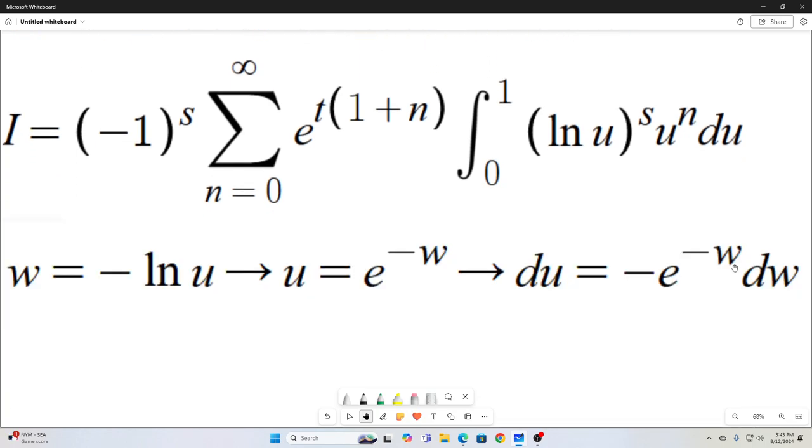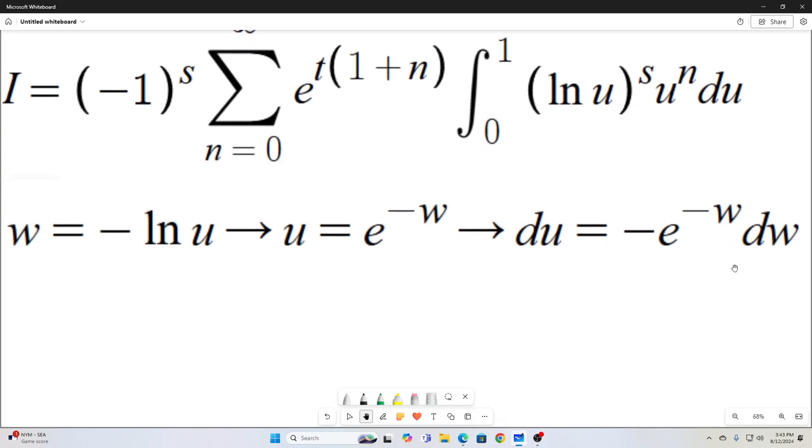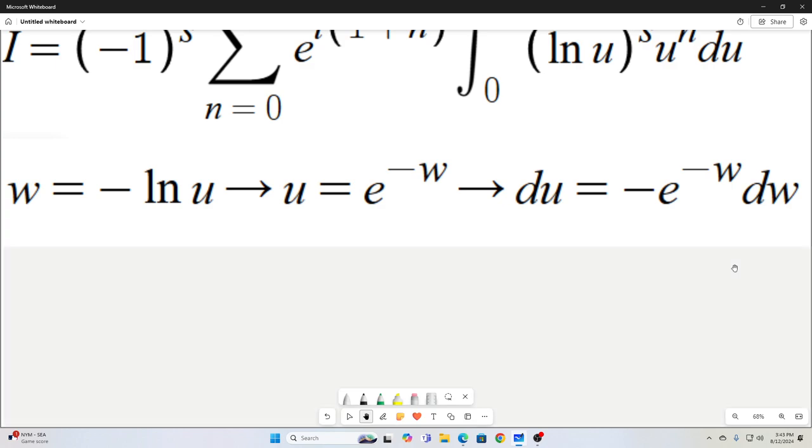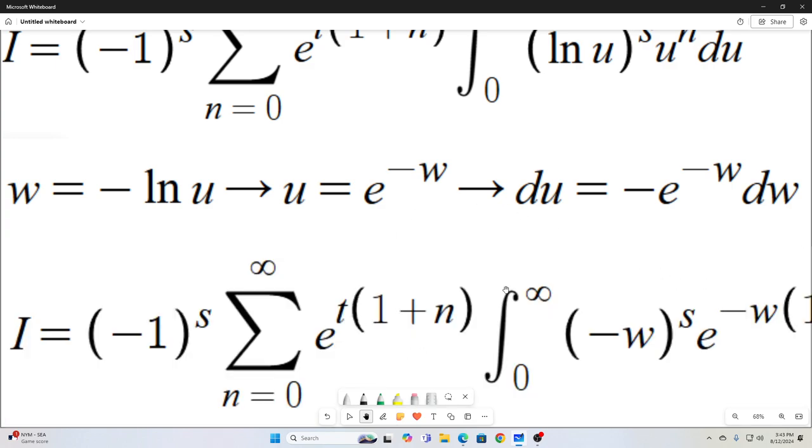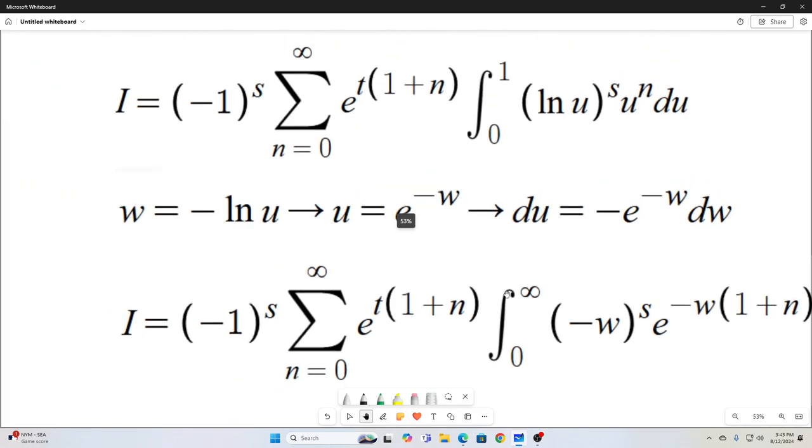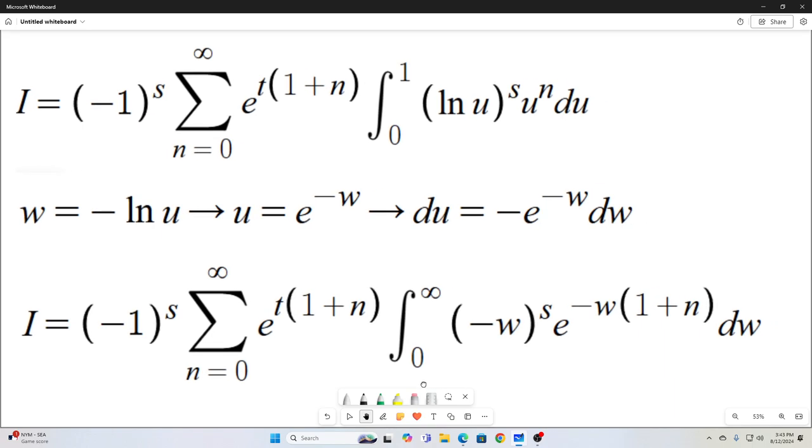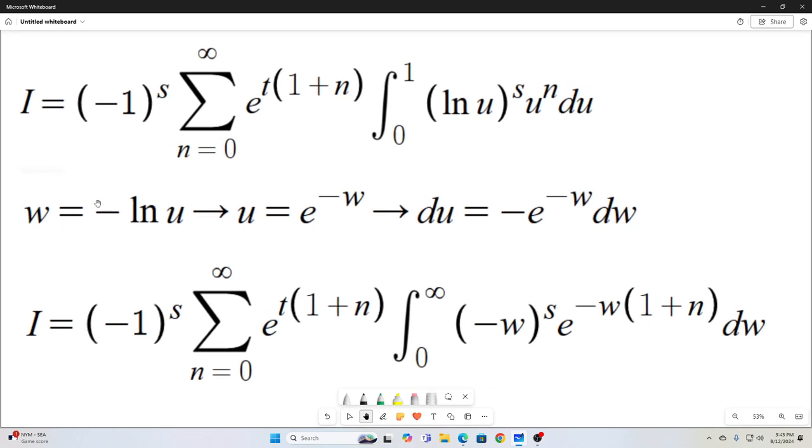All right. Next we make another substitution. We're going to let w equal negative natural log u, which implies all of the following. And then we plug that in, we plug that into our equation right here. It looks like I better zoom out a little bit. Okay. So I just replaced u with e to the negative w, from here to here. And then of course, change the bounds of integration and all that.